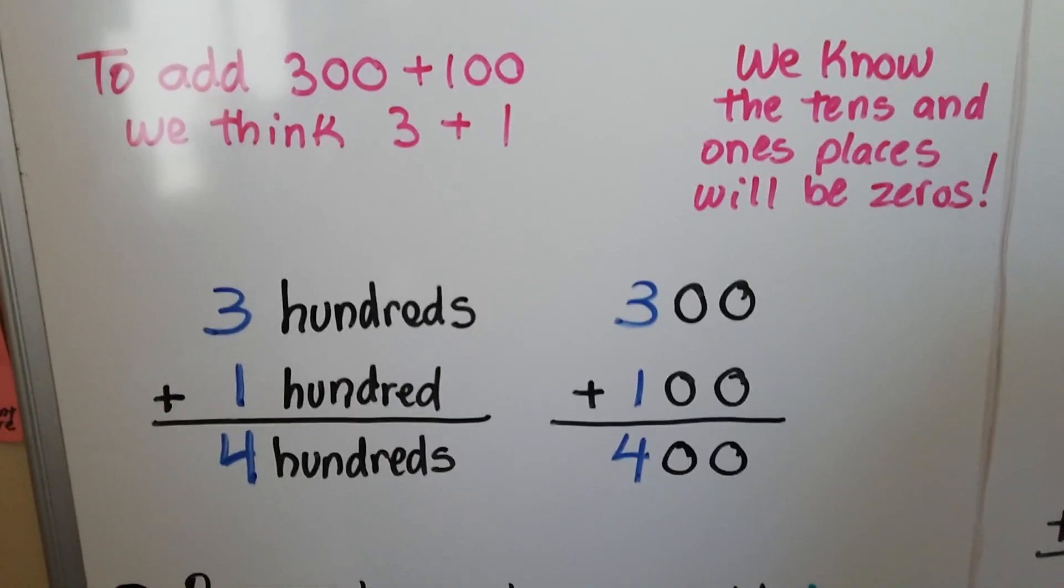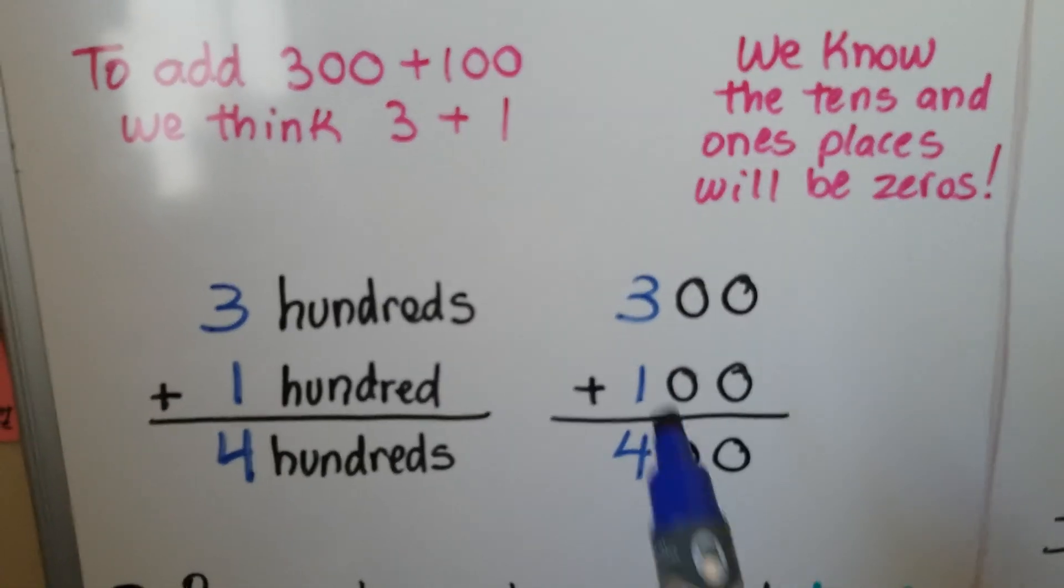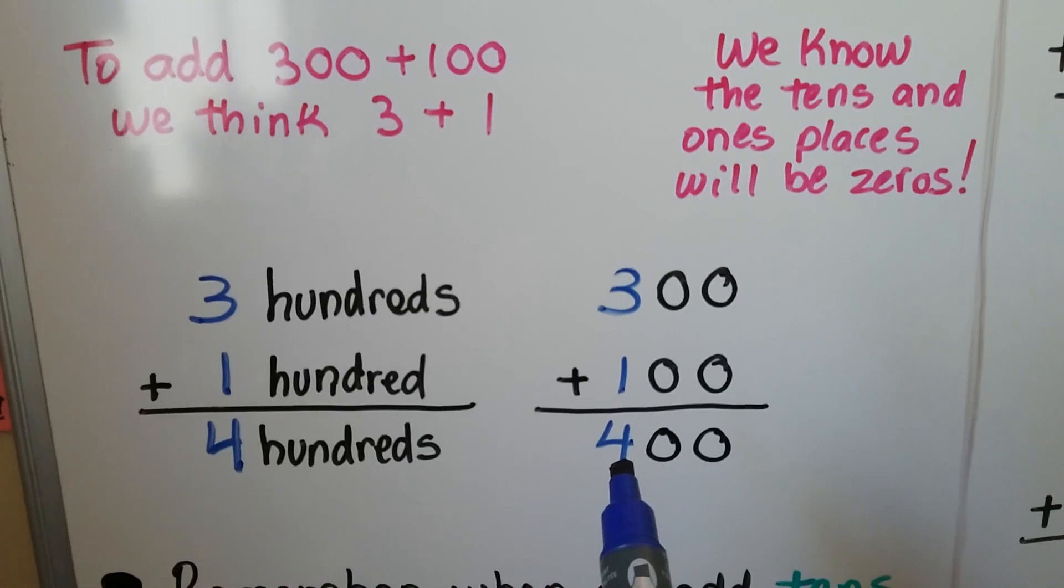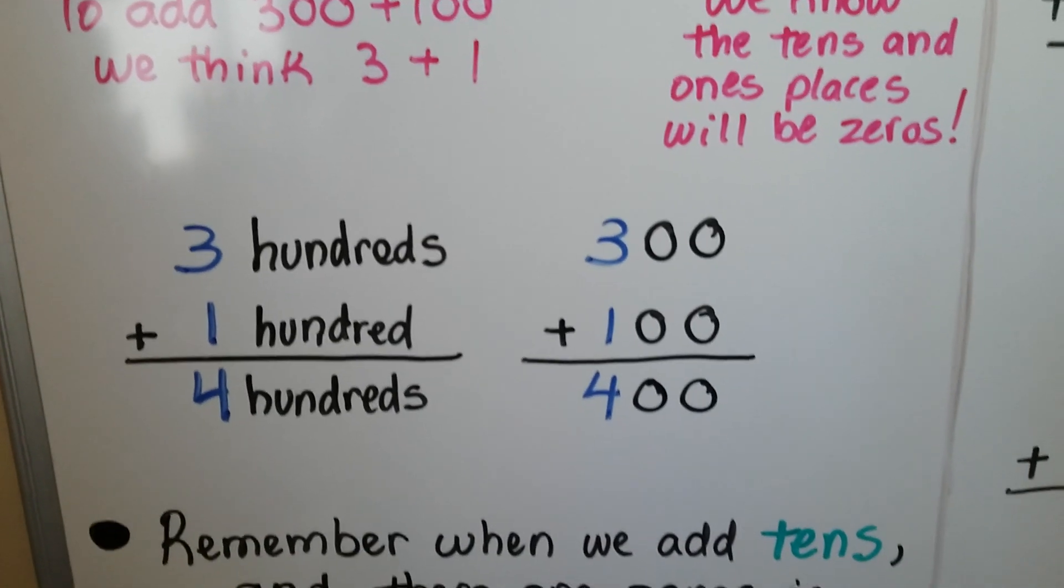See? We know there's zeros in these place values, so we just add the 3 plus 1 equals 4, and we put the zeros down.